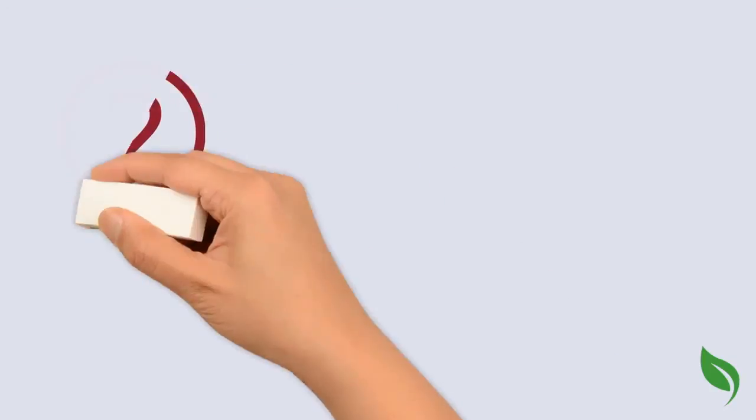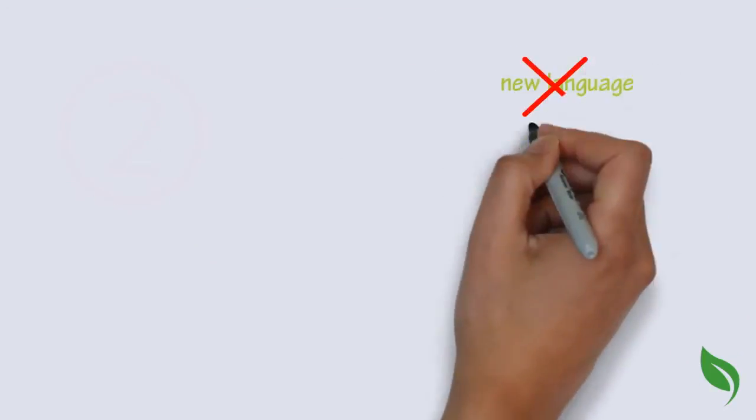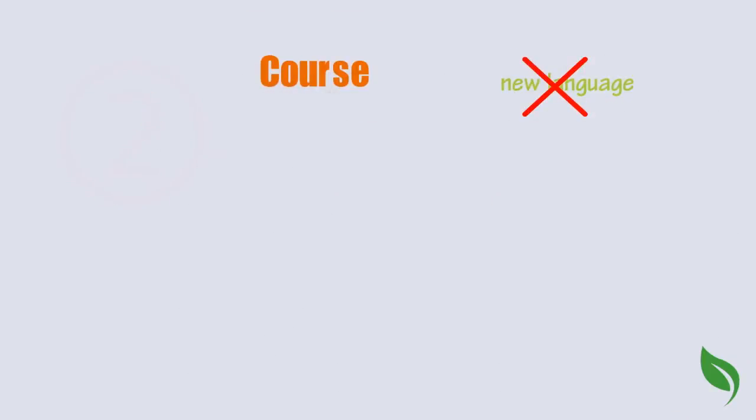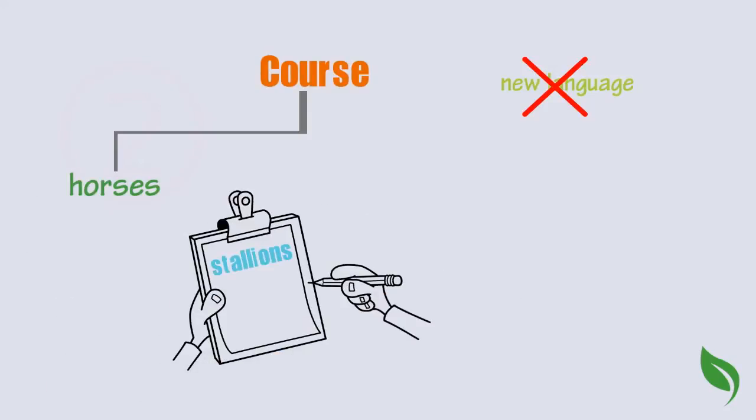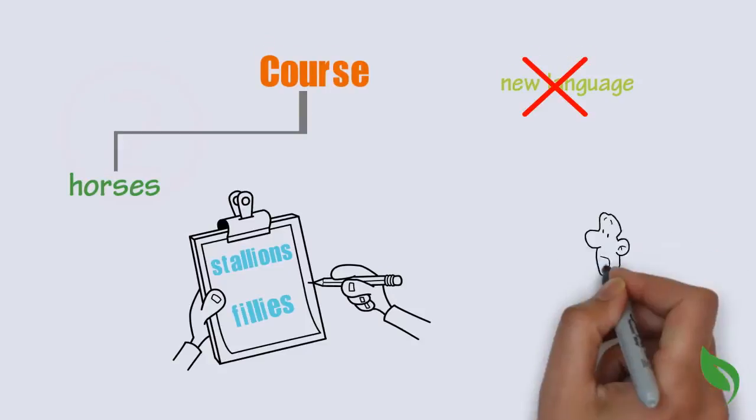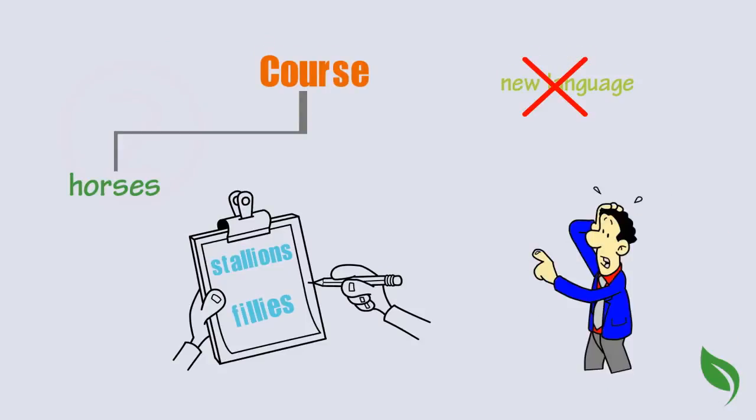Number two. Don't introduce new language. For example, if the course refers to horses as horses, but then the test question refers to stallions and fillies, which are types of horses, the test taker will be unfairly confused.